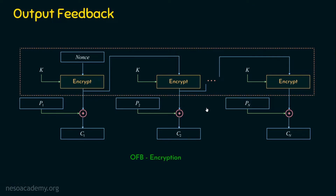Now, what are the important differences between OFB and CFB? In CFB, we had an initialization vector — here also we have one, but here it is a nonce. In CFB, the output of the encryption function generated B bits, but we selected only S bits and discarded B minus S bits. Whereas in OFB, all bits coming out of the encryption function are used. That is one key difference.